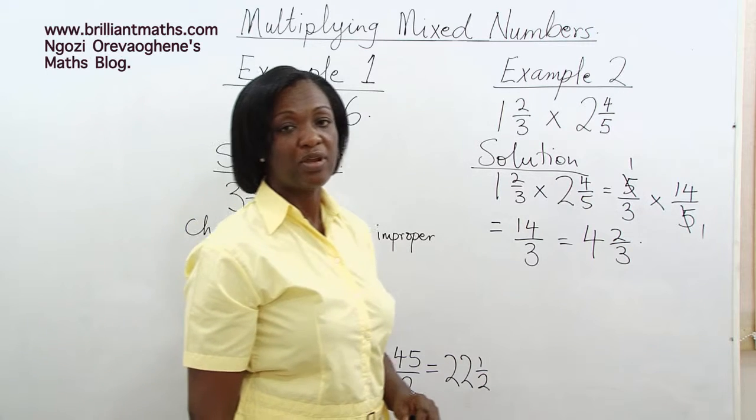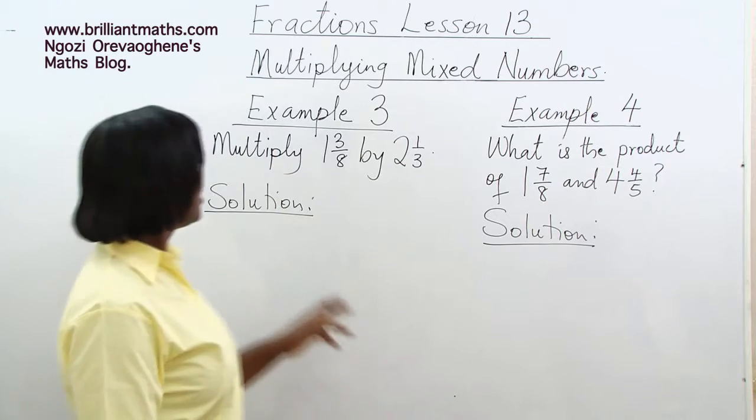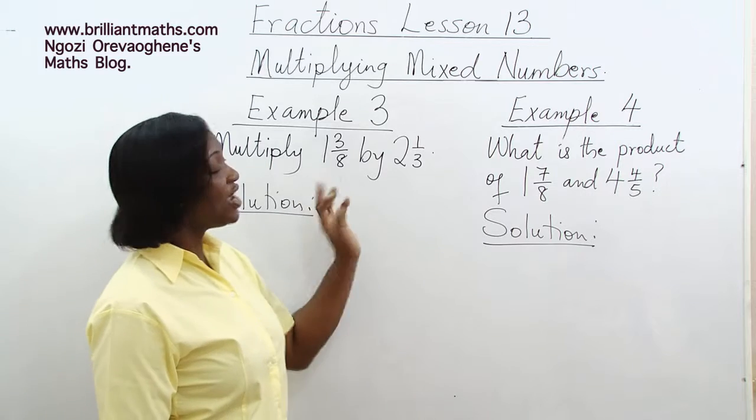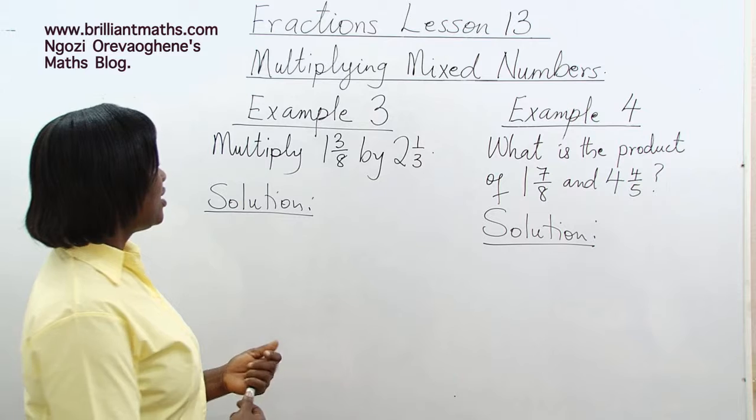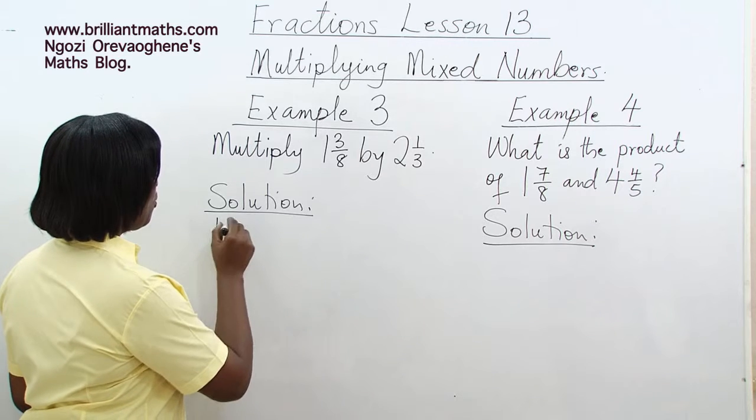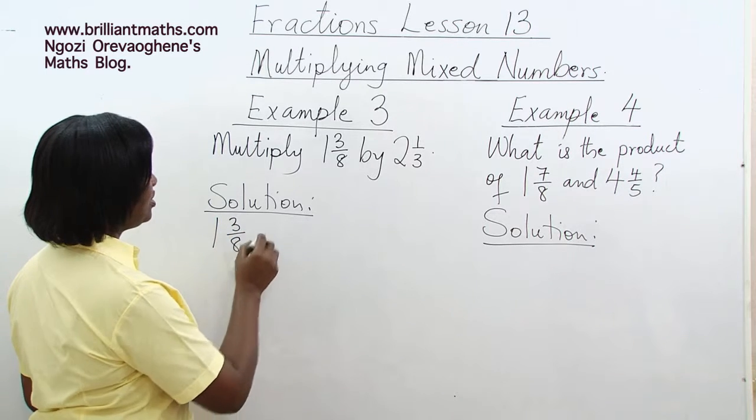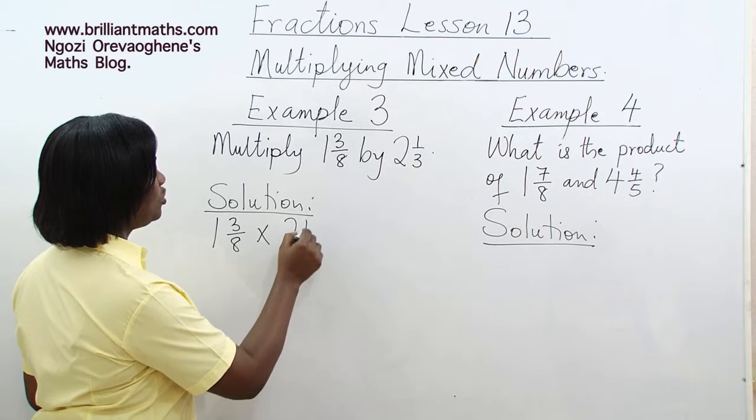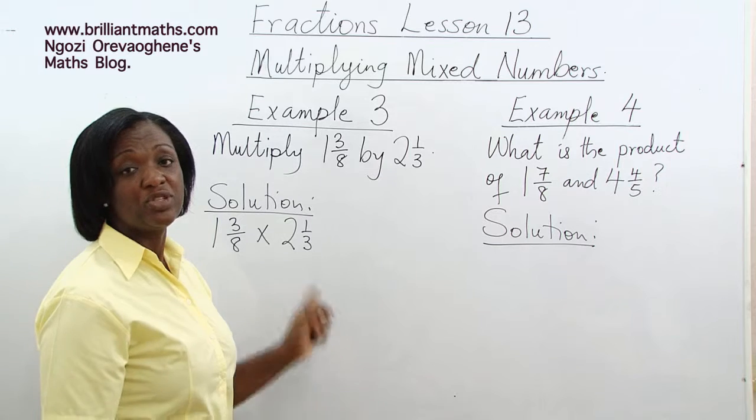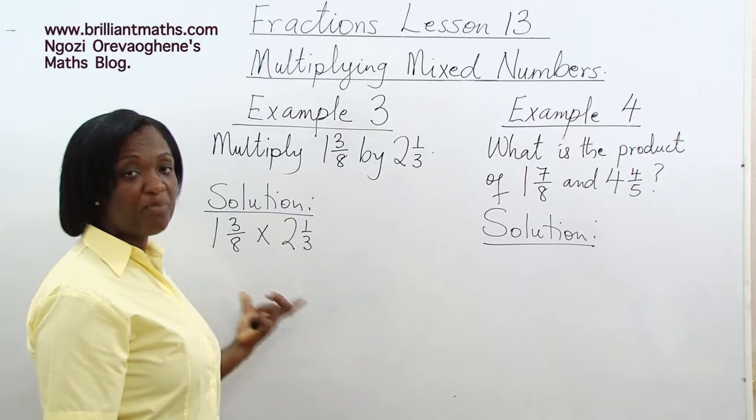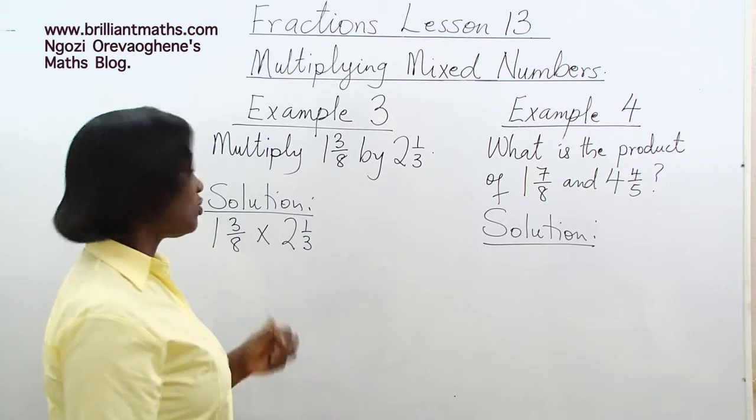Let's look at example 3. Multiply 1 3 eighths by 2 1 third. Solution: 1 3 eighths times 2 1 third. As we can see, both of them are mixed numbers, so we need to change them to improper fractions before we can multiply.